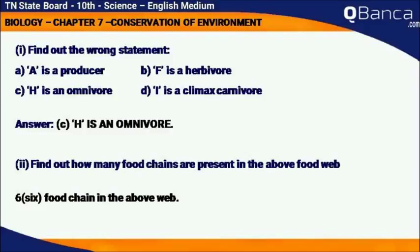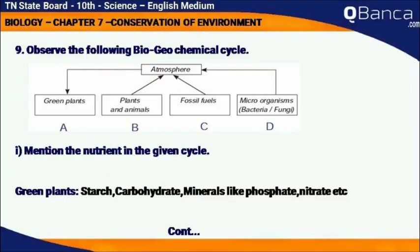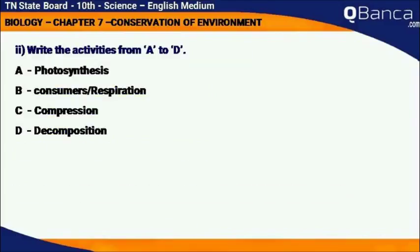Observe the following biogeochemical cycle. Mention the nutrient in the given cycle: Green plant, Starch, Carbohydrate, Minerals like phosphate, nitrate, etc. Write the activities from A to D: A is Photosynthesis, B is Consumer or Respiration, C is Decomposition, and D is Decomposition.